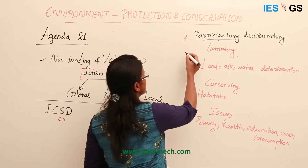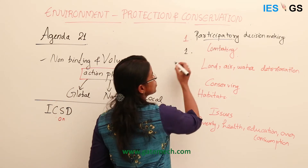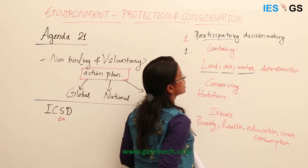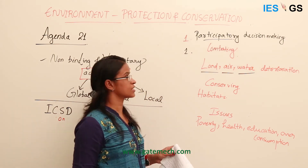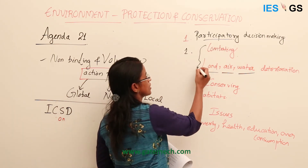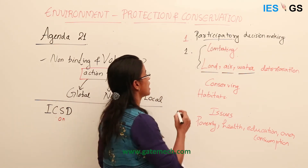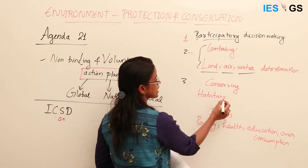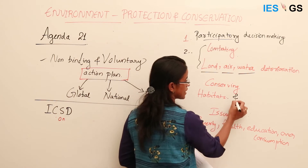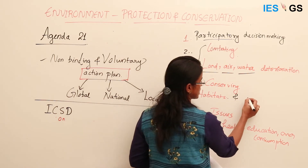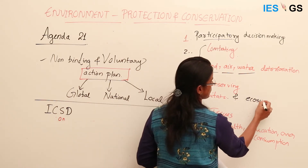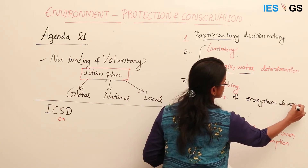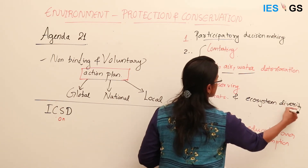Agenda 21 also gives action plans to combat the deterioration of air, water, and land resources. Another issue it addresses is conserving habitats and conserving diversity — that is, ecosystem diversity — with different action plans to conserve habitats and biodiversity.